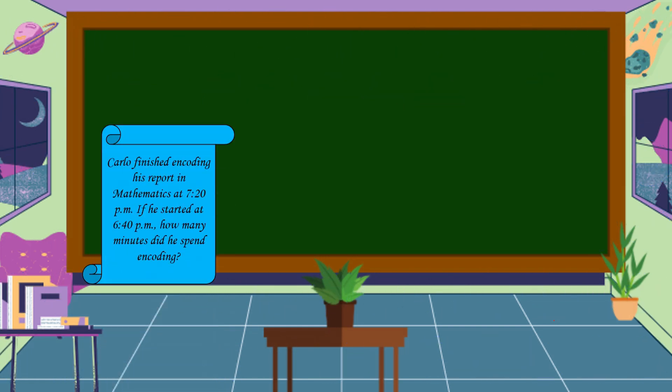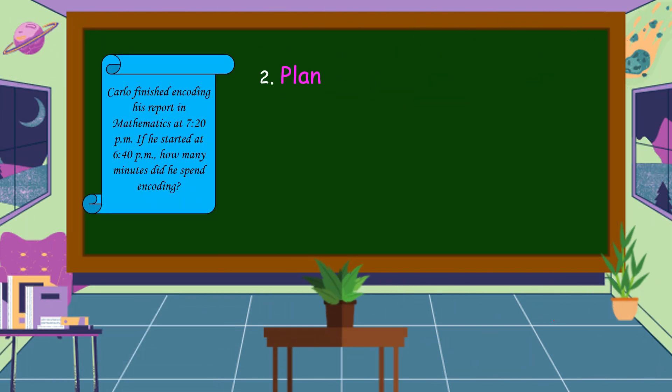The next step is we're going to make a plan. What operation to be used? If we're going to know how many minutes did he spend in encoding, if it started at 6:40 p.m. and finished at 7:20 p.m., we're going to subtract.